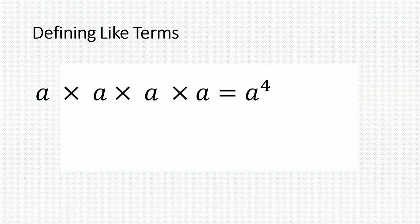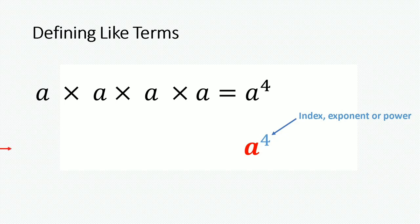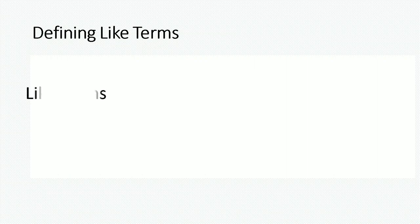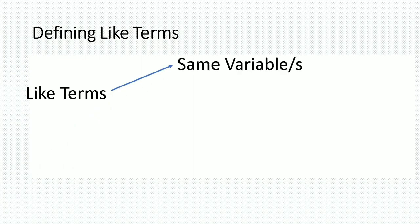This is extended in the use of variables. If I had a multiplied by itself 4 times, this would be equivalent to a to the power of 4. Here the 4 would be the index, exponent, or power, and the a would be the base. Now that we have done that, we can comfortably define like terms. Like terms are terms that have the same variable or variables, and these variables that are common are also written to the same power.